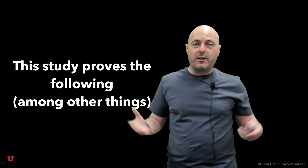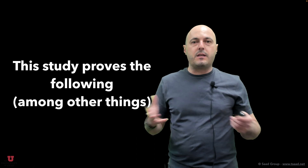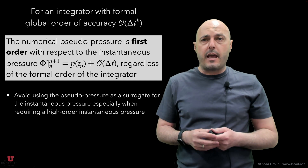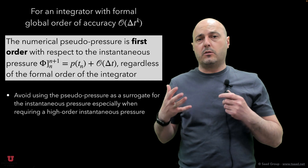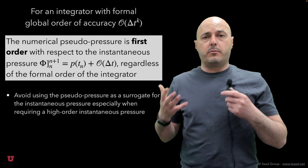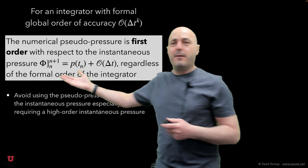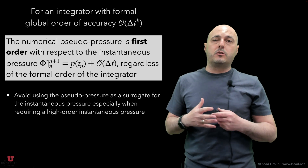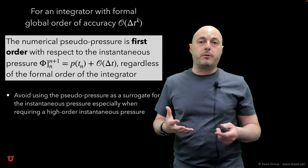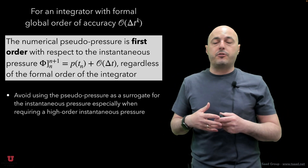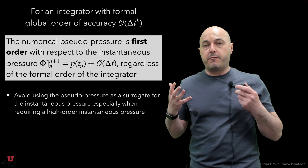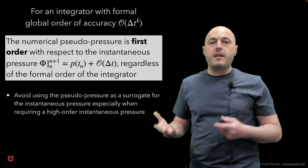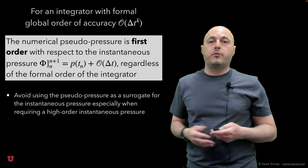The study proves the following among a few other things, summarizing the basic and most important findings. First, for an integrator with a global order of accuracy k, we show that the numerical pseudo-pressure is only first-order with respect to the instantaneous true pressure p(t_n). We can write this as phi^{n to n+1} minus p(t_n) is order delta t. So regardless of the formal order of the integrator, the message is to avoid using the pseudo-pressure as a surrogate for the instantaneous pressure. This is important in applications such as membrane filtration, fluid-structure interaction, or other applications with pressure-dependent boundary conditions where you need the pressure to a high order of accuracy — using phi as a surrogate will introduce a first-order error.